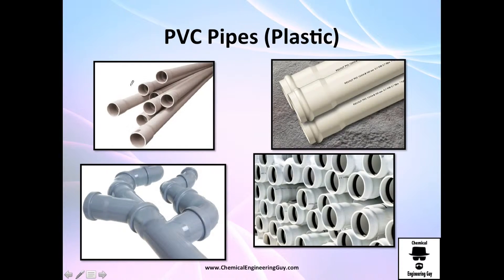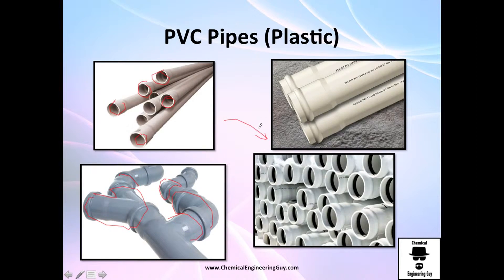PVC is used in bathroom piping, and it has many fittings. Because it's plastic, it's easier to achieve different shapes — with steel and copper you are somewhat limited, but with plastic it's much easier to thermoset and form the desired shape.